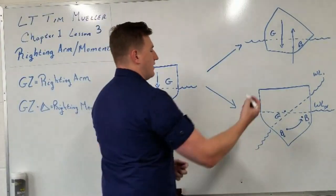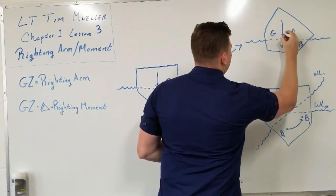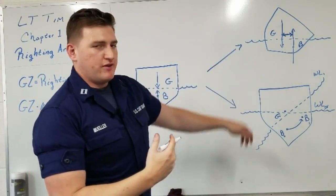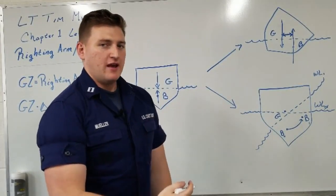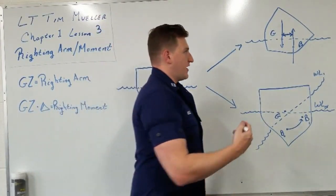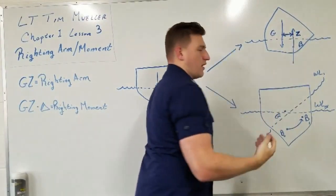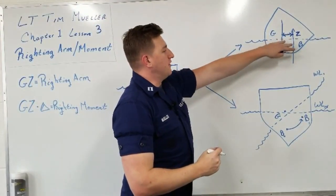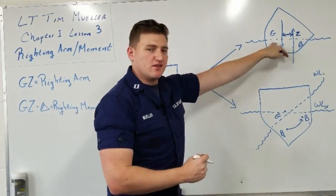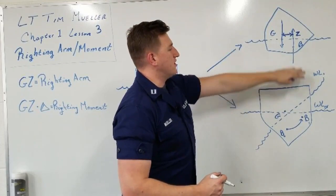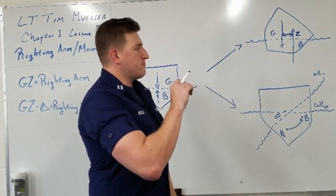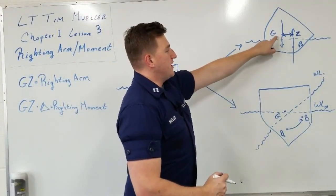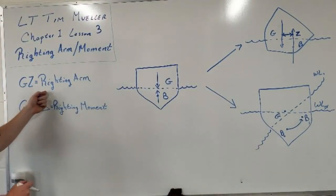What is this distance? We call this, in naval architecture, the righting arm. Now we're going to put a name to it — we call this GZ, the righting arm. Z is a point along the force of buoyancy that is directly perpendicular to where point G is. If we take point G and look at the line of buoyancy, the shortest possible distance — the perpendicular distance — from point G to that line of buoyancy is GZ, or the righting arm.